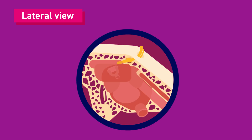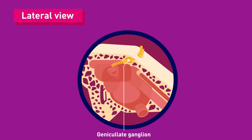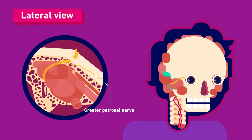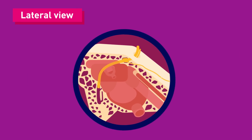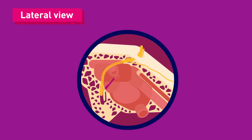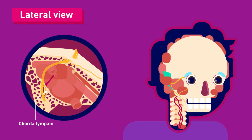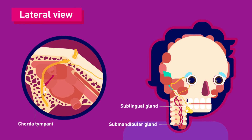Next, the nerve forms the geniculate ganglion. A ganglion is a collection of nerve cell bodies. Lastly, the nerve gives rise to the greater petrosal nerve, which supplies parasympathetic fibers to mucus glands and the lacrimal gland; the nerve to stapedius, which supplies motor fibers to the stapedius muscle of the middle ear; and the chorda tympani, which supplies special sensory fibers to the anterior two-thirds of the tongue and parasympathetic fibers to the submandibular and sublingual glands.